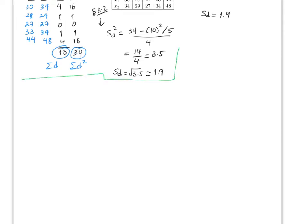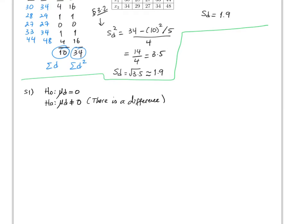Now we have everything needed to start the problem. The claim is mu_D equals zero, meaning there is no difference between before and after — rejecting it would imply the shoes could make you jump higher. For Step 2, t-star equals the square root of n times D-bar divided by S_D, which is the square root of 5 times 2 divided by 1.9, giving t-star equals 2.35.